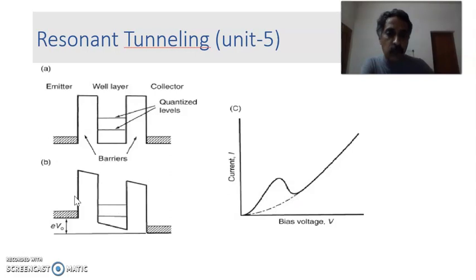So for tunneling to happen, resonant tunneling to happen, resonance has to happen between the energy of the incident electron and the energy of the first discrete state of the quantum well. Then the tunneling happens. So this is called resonant tunneling.